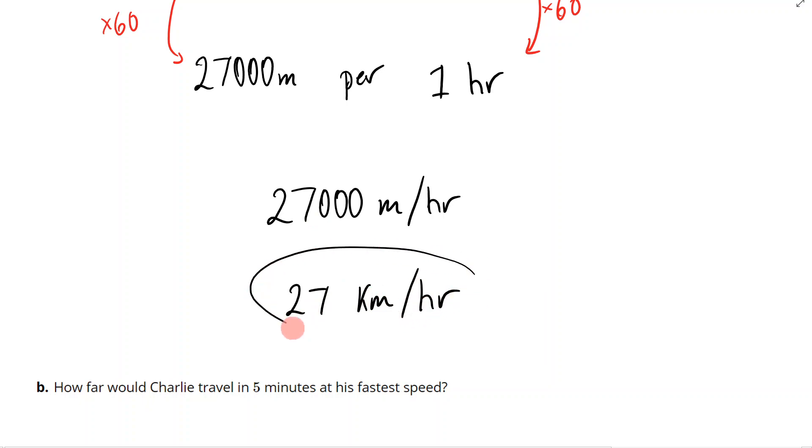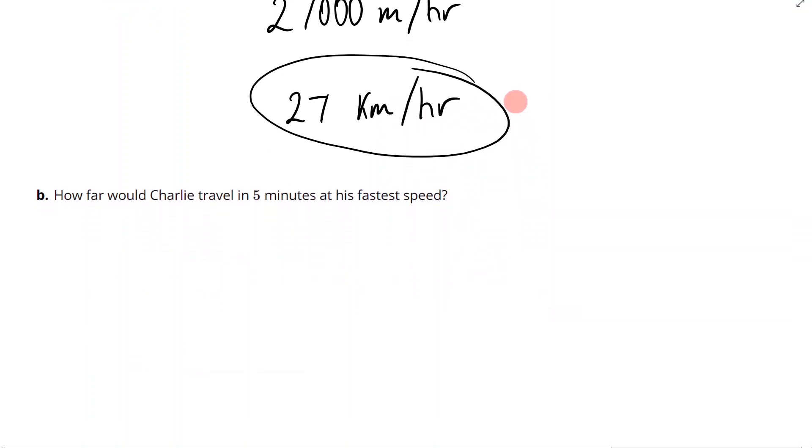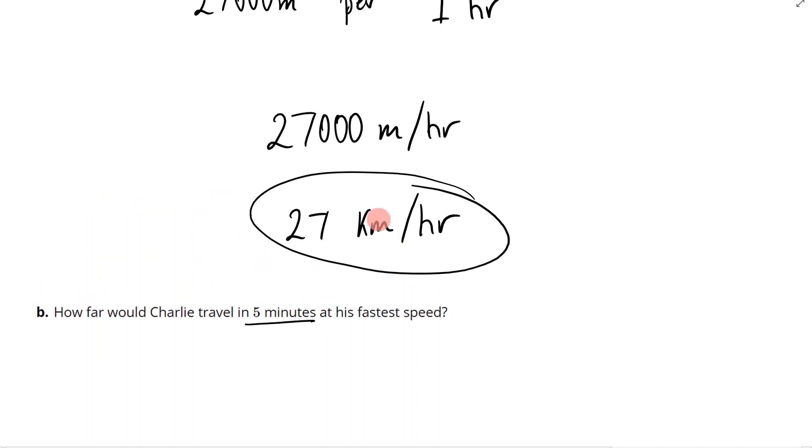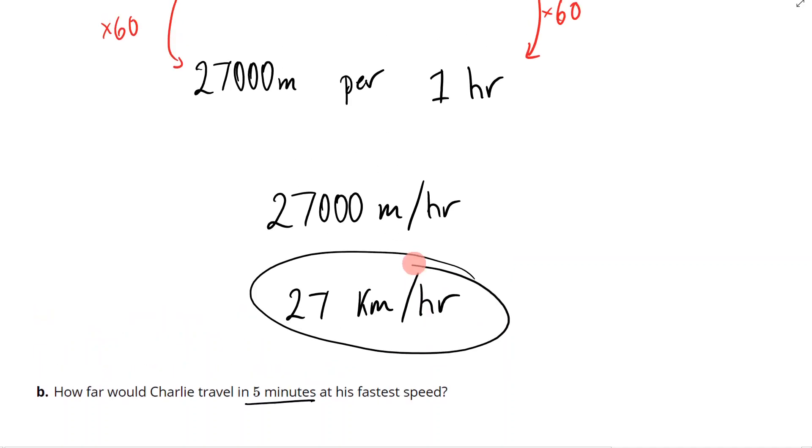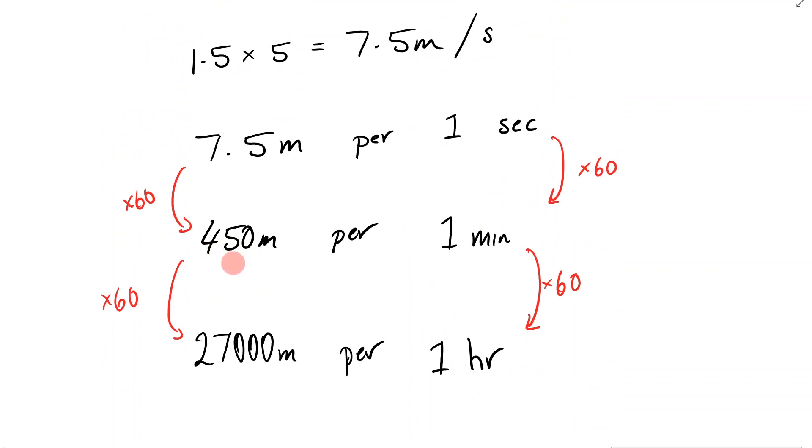Now the next thing we need to do for part b: it says how far would Charlie travel in five minutes at this fastest speed? So I need to calculate it for five minutes. Now would you agree that this speed that I figured out isn't going to be that helpful because I've got it in terms of hours? But if we come up, we've got this one right here: this is 450 meters per one minute. This one is great because it's really easy to go from one minute to five minutes.